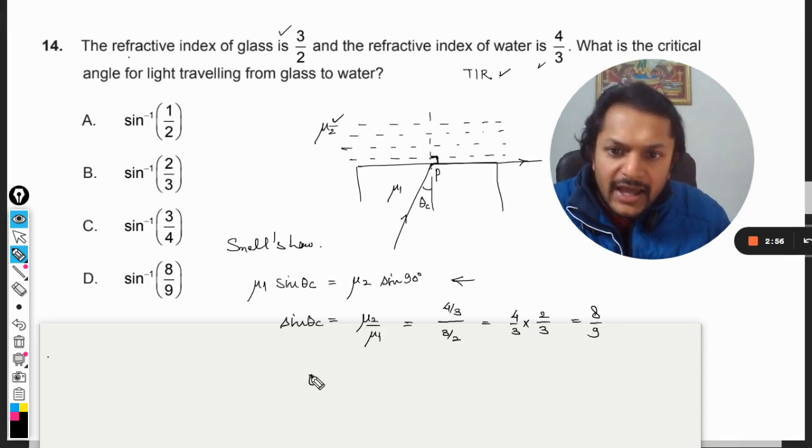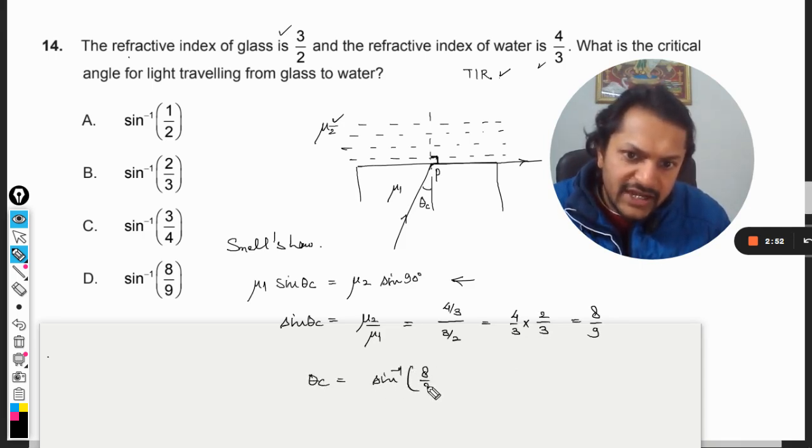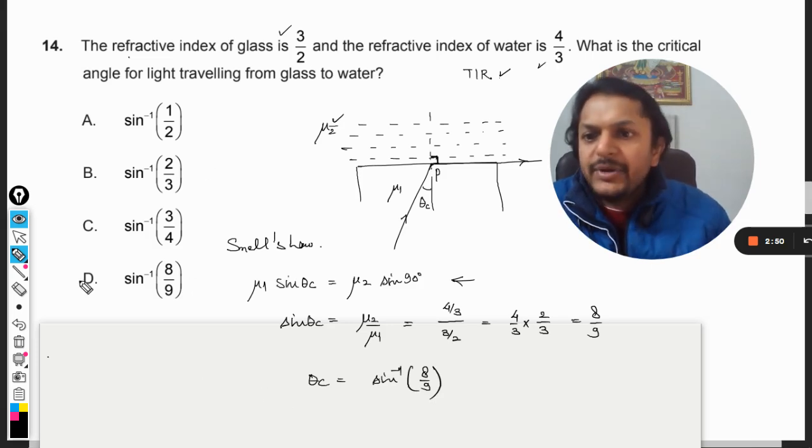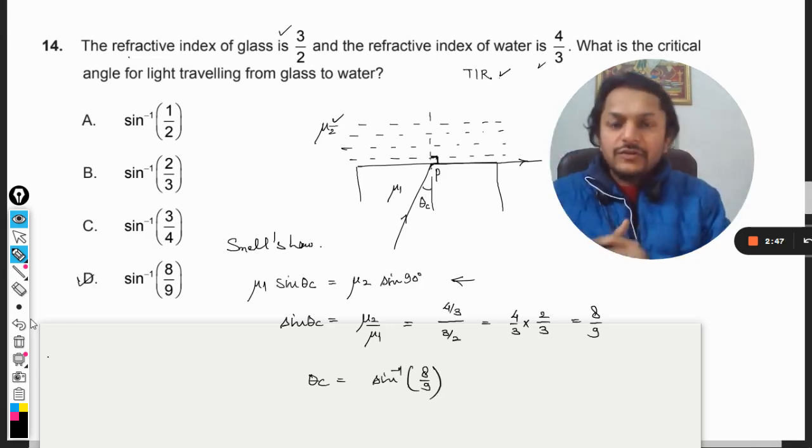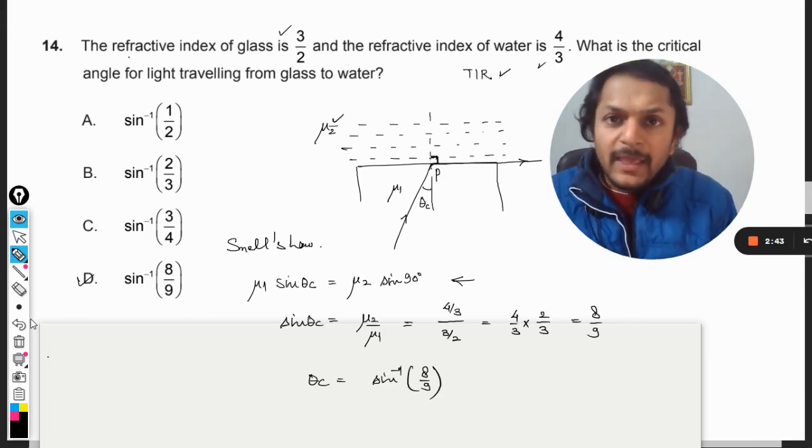And hence theta critical is sine inverse 8 by 9 and on comparing we get that the answer for this question is D. So this is how we do this question.